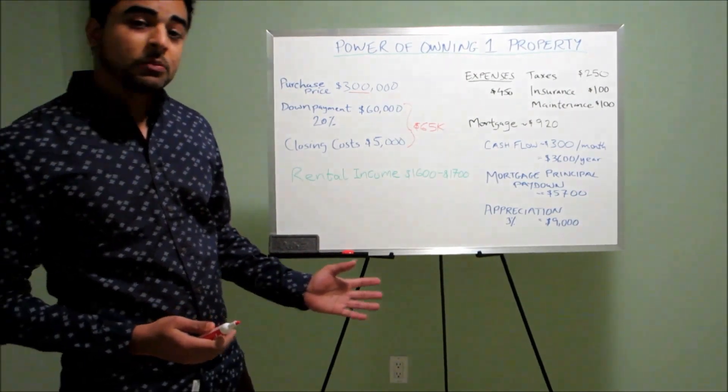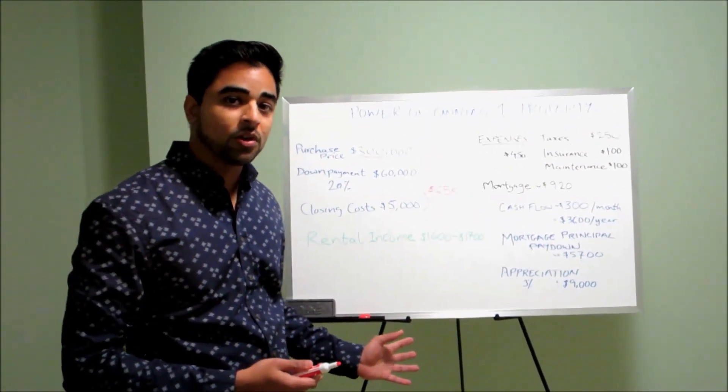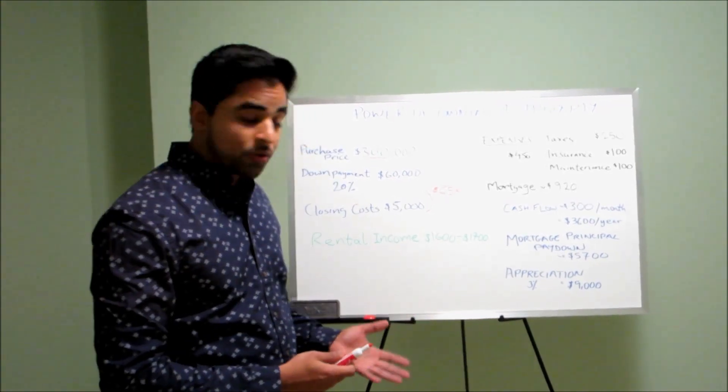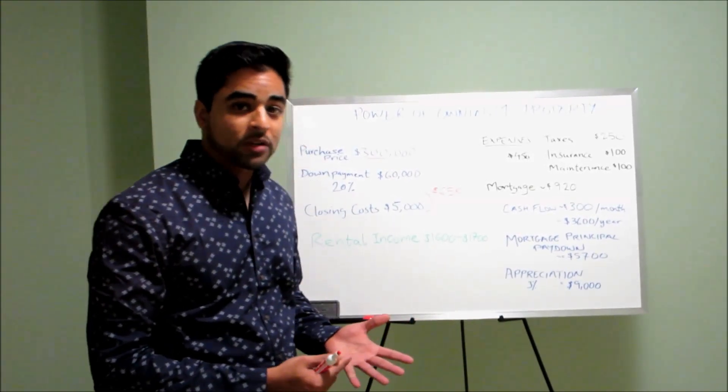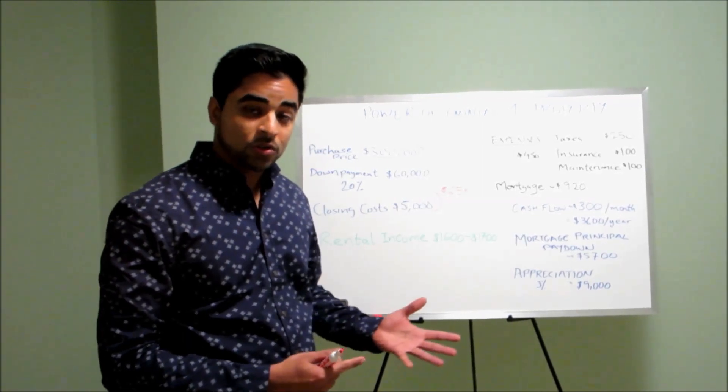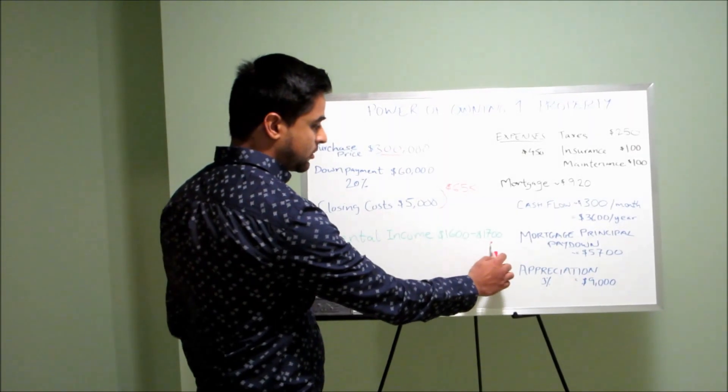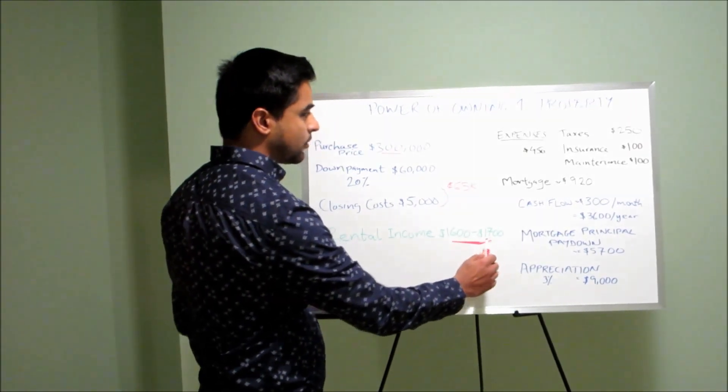So with a single family home, your rental income is going to be approximately $1,600 to $1,700, whether you're doing a single family straight rental or a rent-to-own, which can also be beneficial. So rental income of about $1,600 to $1,700 is what I've accounted for.